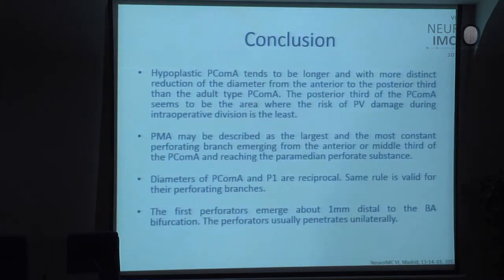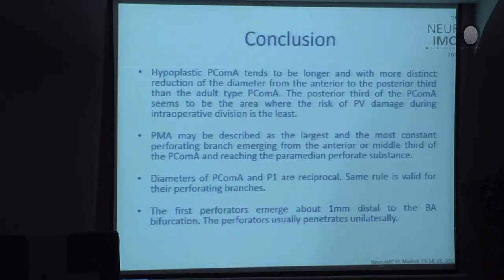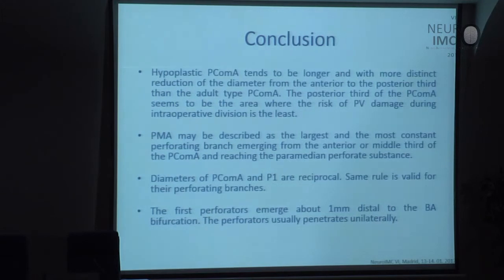In conclusion: hypoplastic posterior communicating artery tends to be longer and with more distinct reduction of diameter from the anterior to the posterior distal third than the adult type. The posterior third of the PCOM seems to be the area where the risk of damage to perforating vessels during intraoperative division is least. The premammillary artery is the largest and most constant perforating branch emerging from the anterior or middle third of the PCOM, reaching the paramedian perforated substance. The diameters of the PCOM and P1 segment are reciprocal, as are their perforating branches. The first perforators emerge about 1 mm distal to the basilar artery bifurcation, and the perforators usually penetrate unilaterally.